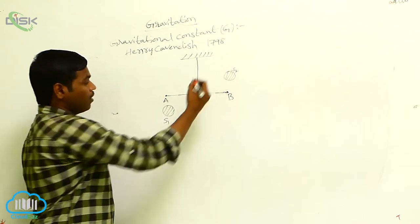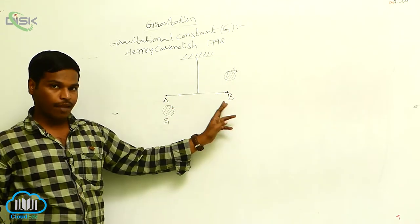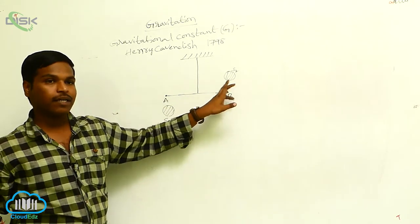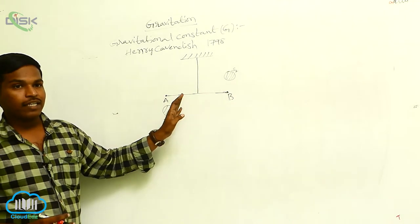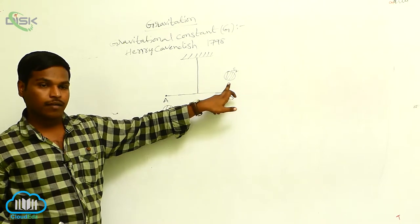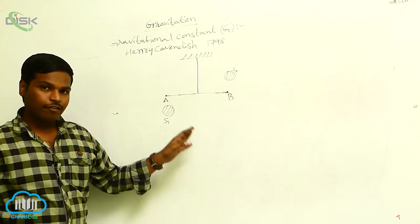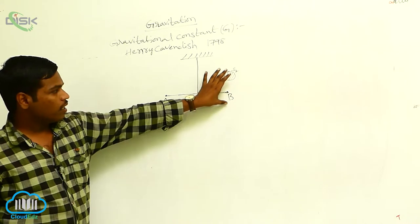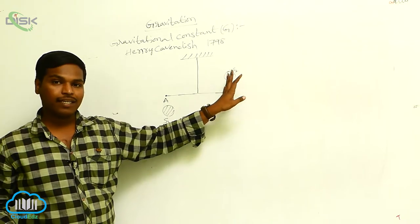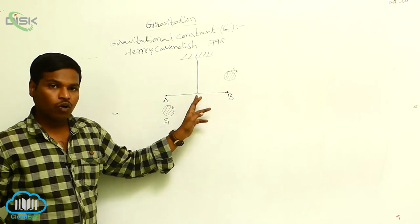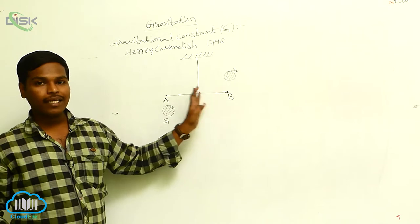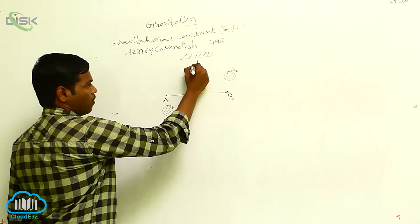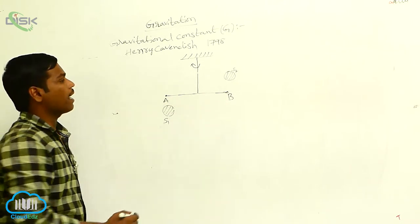When these bigger spheres are brought nearer to the rod AB, the gravitational force of attraction acts between the smaller spheres and the bigger spheres. Two equal forces act in opposite directions, so there is no net force acting on the rod AB — only a torque acts on this rod.